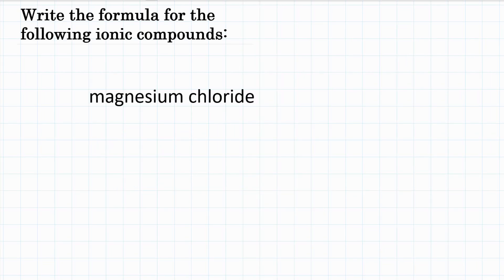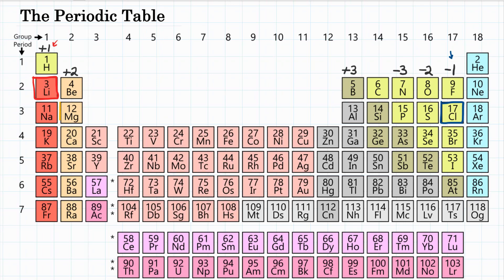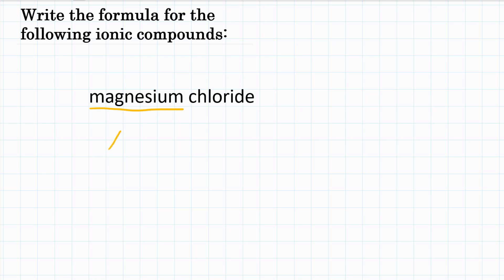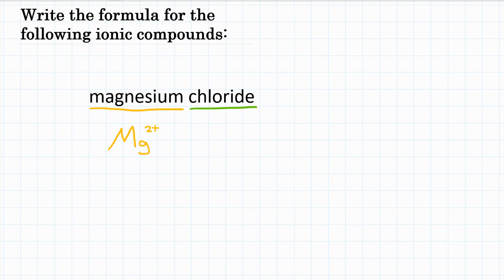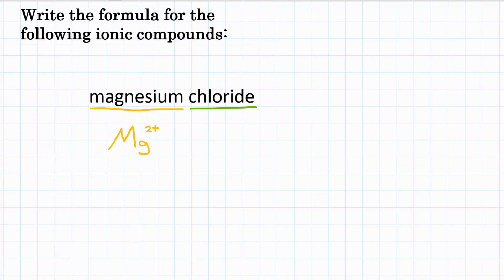Next example: magnesium chloride. Magnesium, symbol Mg, is in the second column of the periodic table and will become a positive two. Chloride is just chlorine — in group 17, it becomes negative one. We write the number first then the sign: magnesium is two positive, chlorine is negative one.